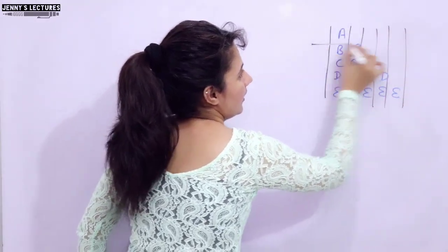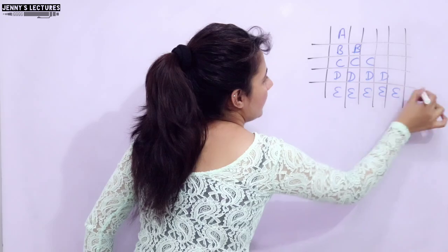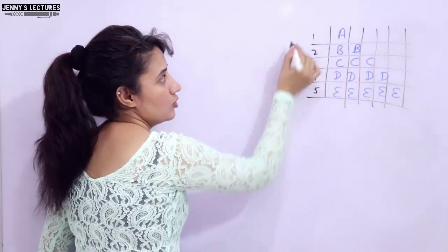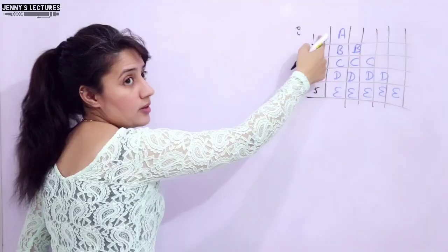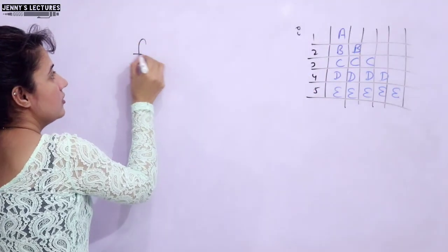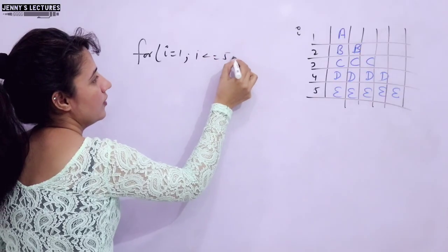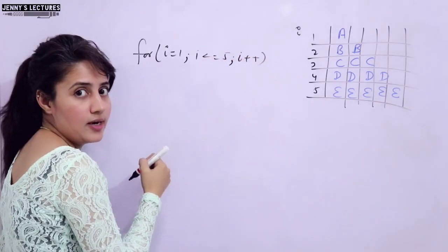First, you have to analyze the pattern and divide it into number of rows and columns. How many rows are there in this? 1, 2, 3, 4, 5 rows. So the outer loop would run from 1 to 5. The outer loop would be i = 1, i <= 5, and i++.